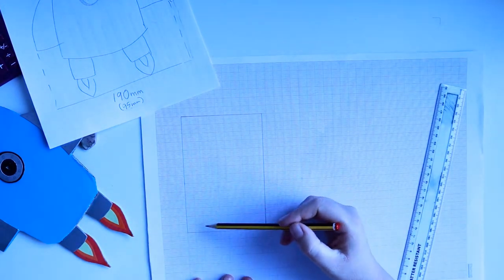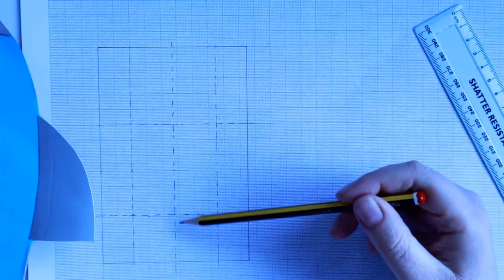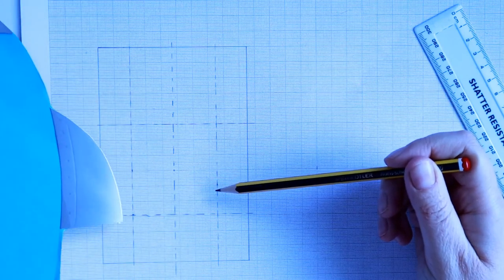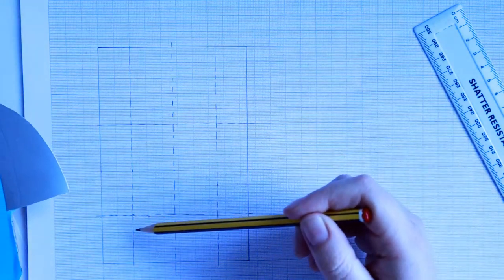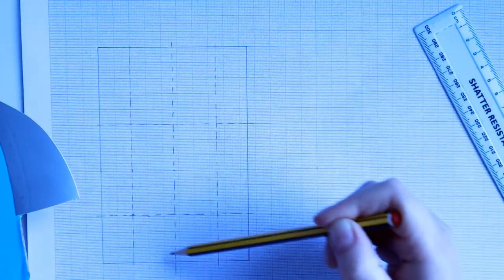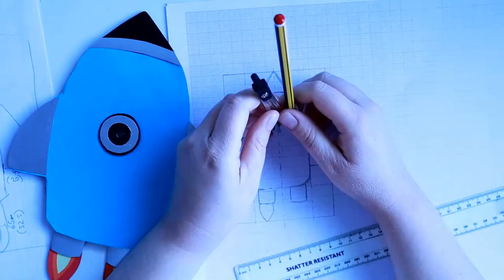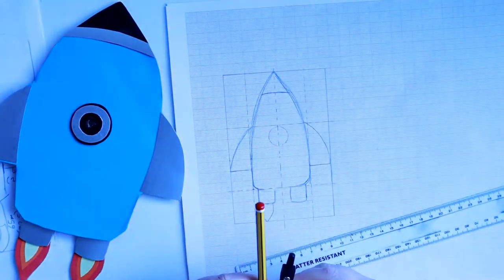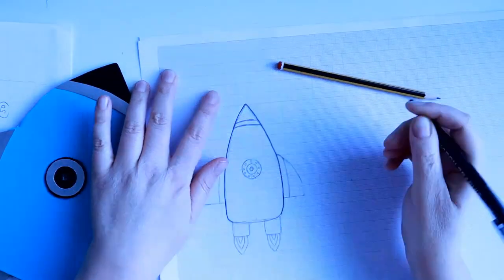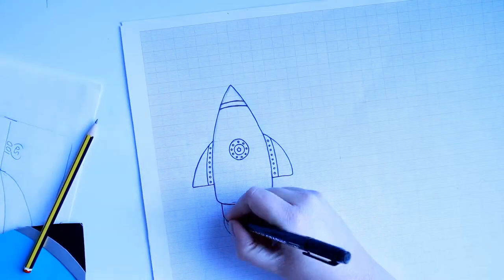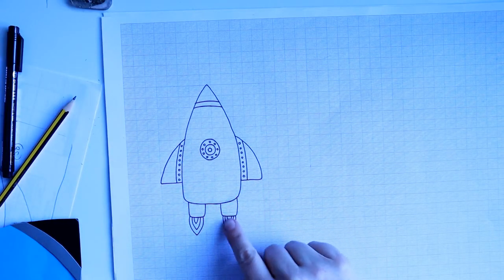So now I know that I need to fit my design within this box. So what I've done is I've just marked out some guidelines on my drawing, just so I know where the main features will go. Depending on your design, you may not need guidelines. You might be able to just draw yours freehand inside the big box.